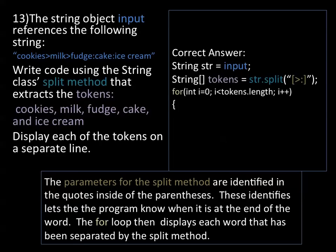As the for loop iterates, it will find the tokens and print them out.